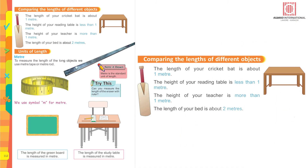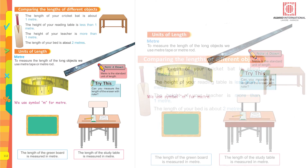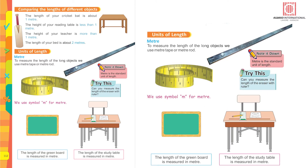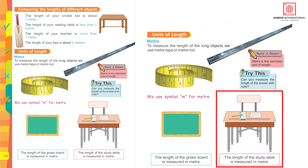The length of your cricket bat is about 1 meter. The height of your reading table is less than 1 meter, and the height of your teacher is more than 1 meter. The length of your bed is about 2 meters. To measure long objects we use a meter tape or meter rod, using the symbol M for meter. The length of the green board and the study table are both measured in meters.